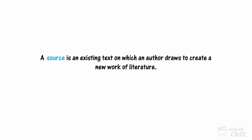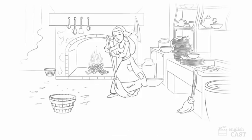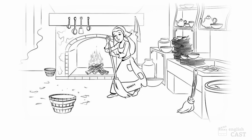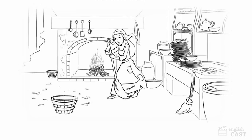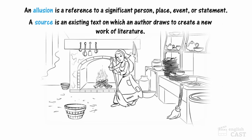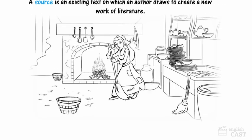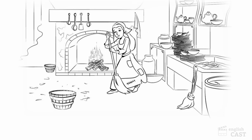A source is an existing text on which an author draws to create a new work of literature. For instance, when my dad called me Cinderella, the source of the allusion was the fairy tale Cinderella. Remember, in the story, Cinderella's mean sisters make her do all the housework.